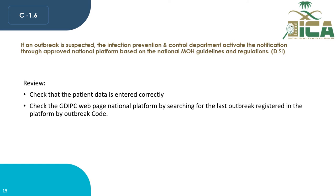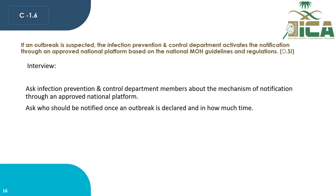If an outbreak is suspected, the infection prevention and control department activates notification through the approved national platform based on national MOH guidelines and regulations. The auditor must review and check that patient data is entered correctly, and check the DBIC web page national platform by searching for the last outbreak registered by outbreak code. The auditor must also ask IPC department members about the mechanism of notification through the approved national platform.